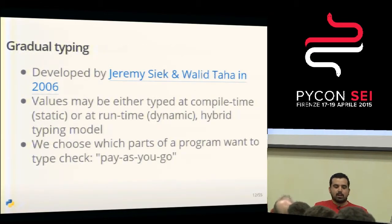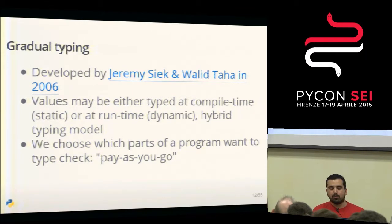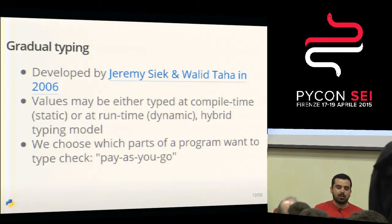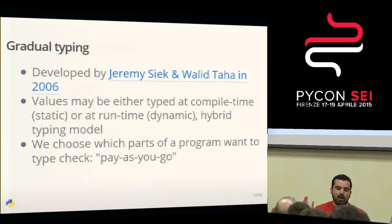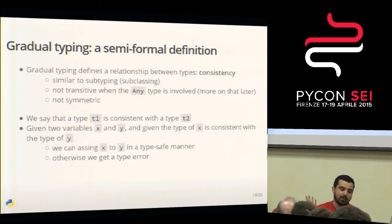These are some examples of dynamic languages. Python is what we are talking about now. So let's talk about gradual typing. This was developed by two computer scientists not so long ago. The idea is that in a dynamically typed programming language, we will be able to type some parts of the program statically and use dynamic typing in others. It's a hybrid model where you choose what you type. Python will now be in that list with Python 3.5.